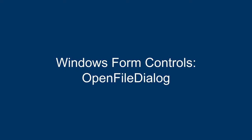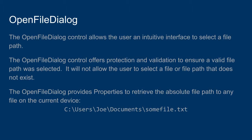In this video, we will look at the Open File Dialog Control in Windows Form applications. The Open File Dialog Control allows the user an intuitive interface to select a file path, instead of having the user manually enter a string file path, which is prone to errors and could reference a file that does not exist. The Open File Dialog provides a convenient interface and verifies that the selected file is valid.